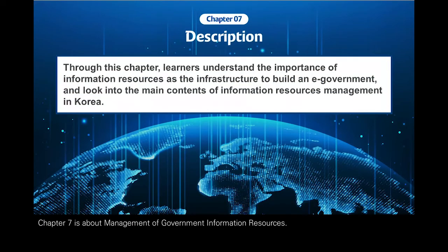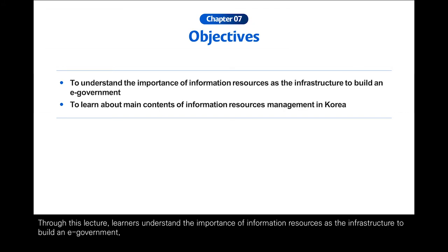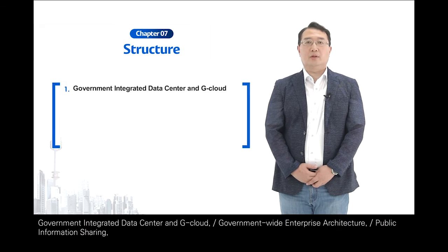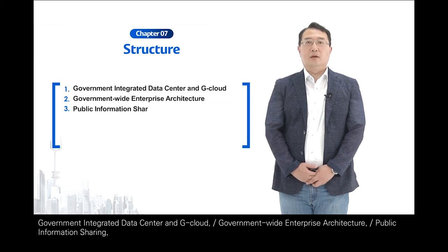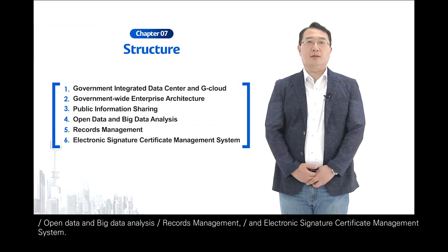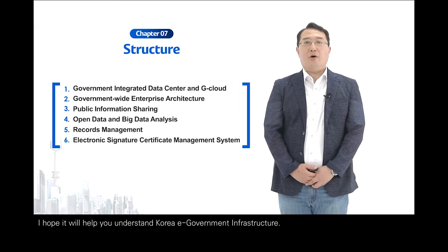Chapter 7 is about the management of government information resources. Through this lecture, learners understand the importance of information resources as infrastructure to build e-government, and look into the main contents of information resources management in Korea. In this chapter, we learn government integrated data center and G-Cloud, government-wide enterprise architecture, public information sharing, open data and big data analysis, records management, and electronic signature certificate management system. I hope it will help you understand Korea's e-government infrastructure.